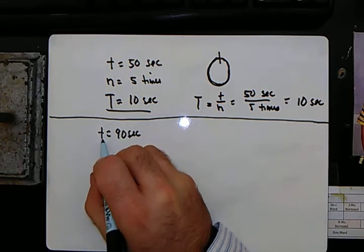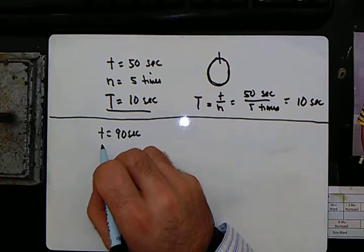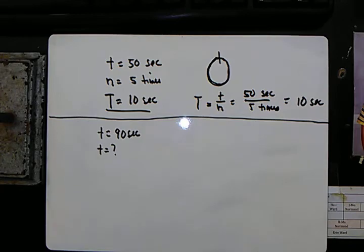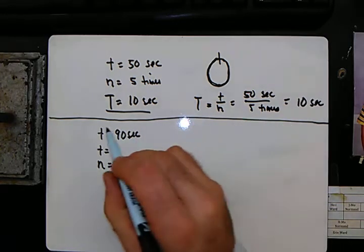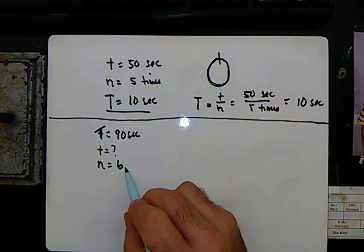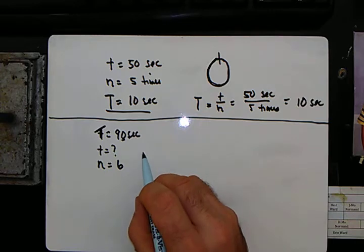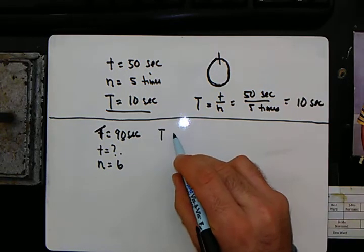So I wrote T as 90 seconds. But after reading further, it asks how much time would it take to complete six loops of the track. So this one is our period because it takes 90 seconds to go around once. We're looking for little t. So again, here's our period formula.